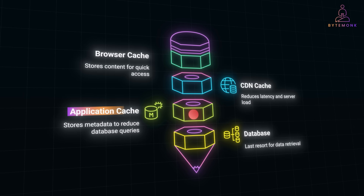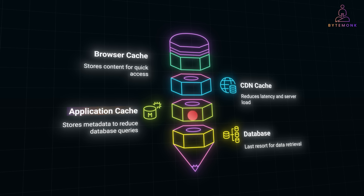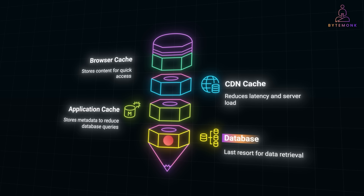If neither the browser nor the CDN has the image, the request reaches your application's API server. Here, an application-layer cache like Redis or Memcached stores metadata or frequently accessed data about the image — such as image URL, resolution, or compression format — reducing repetitive database queries and keeping the backend efficient. Finally, if there is a cache miss at all layers, the server fetches the image metadata from the database. This is the last resort and typically the slowest step. Once retrieved, the data is passed back through the layers, updating the caches for future requests.